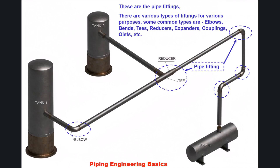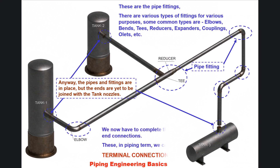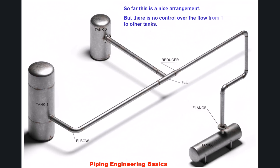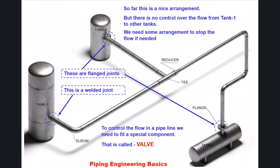The pipes and fittings are in place, but the ends are yet to be joined with the tank nozzles. We now have to complete the end connections — in piping terms, we call these terminal connections. There are flanged joints and welded joints. To control the flow in a pipeline, we need to fit a special component called a valve.